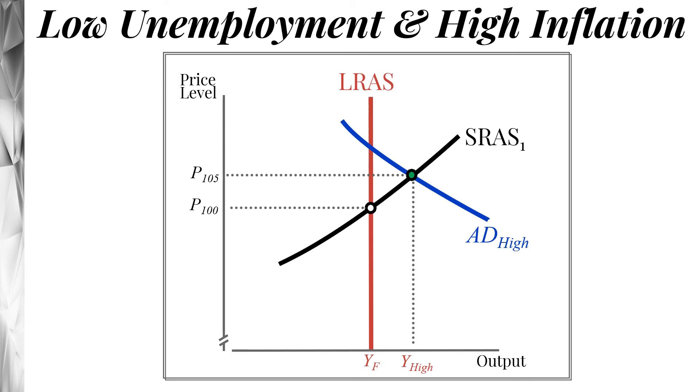The opposite is also true. If we move up from our original price level of a hundred and we shift aggregate demand out and aggregate demand is now high. Now, what we see is we see a higher price level. So we've had some inflation here, so we have high inflation. We've moved from a price level of a hundred up to 105, but our output is also high. The only way we get high output is if we have low unemployment. So if aggregate demand is pushed out, what do we have? We have high inflation, but low unemployment.